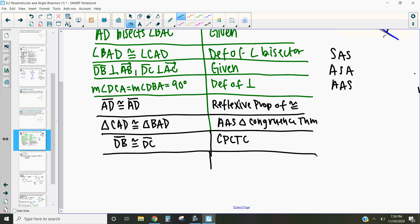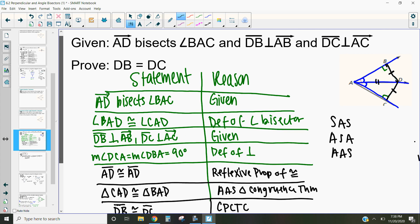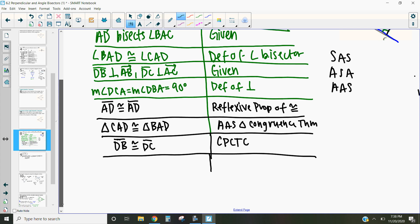Now the very last thing we need to do is we don't want to prove that they're congruent, but we want to prove that they're equal. And so how can we prove that they're equal? Well, we can say DB equals DC.